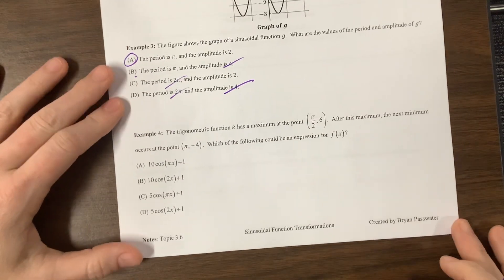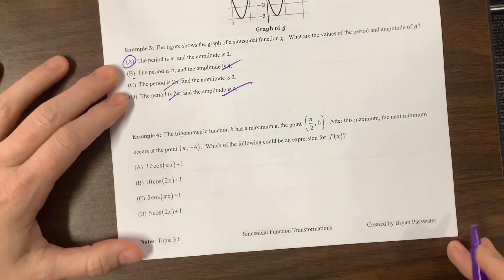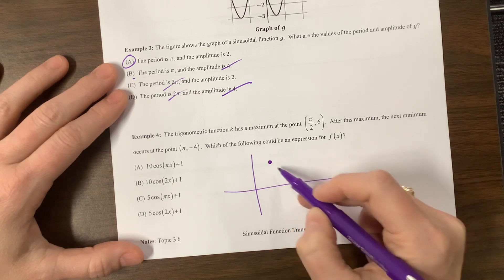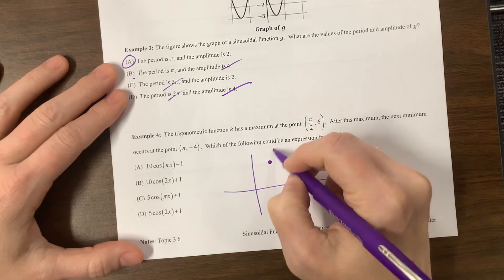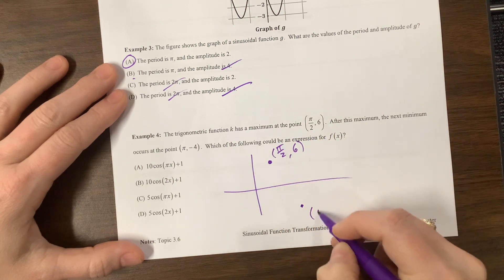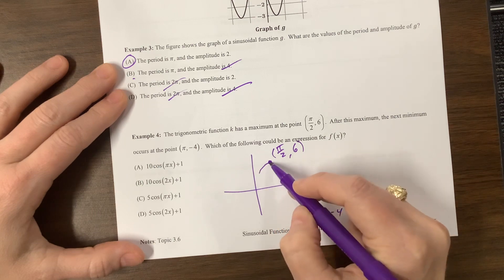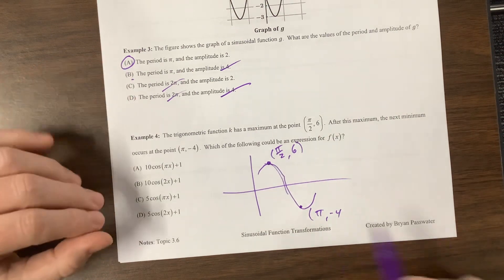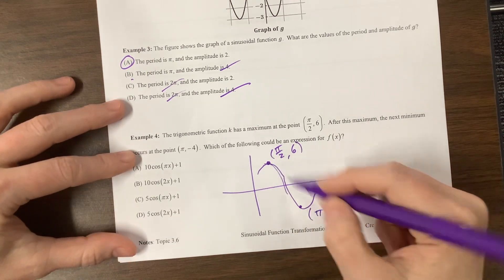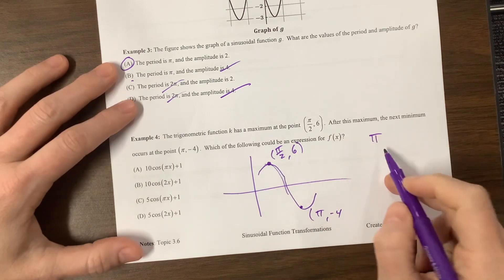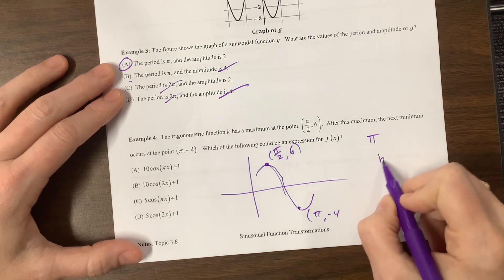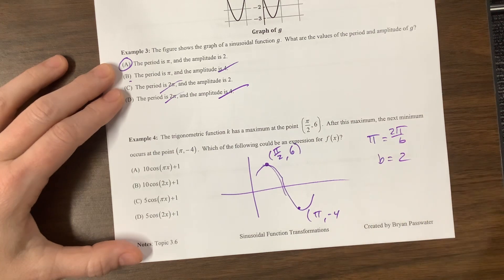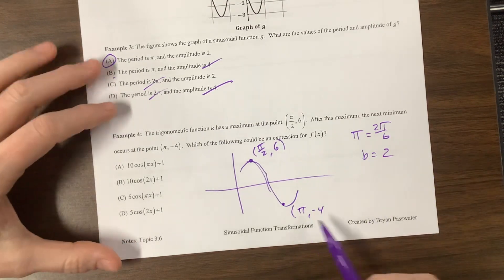A trig function k has a maximum at that point. After this maximum, the next minimum occurs at that point. So let's see. If I were to sketch this, π over 2, 6 is somewhere up here. π negative 4 is somewhere down here. So let's label that. π over 2, 6. This is π negative 4. And so this had done, I don't know exactly what over here, and then it changes concavity to do something like that. So this half of the period is π over 2, so the whole period is π. We keep seeing a b value. If the period is, if π equals 2π over b, that means b equals 2. That's the third problem in a row.